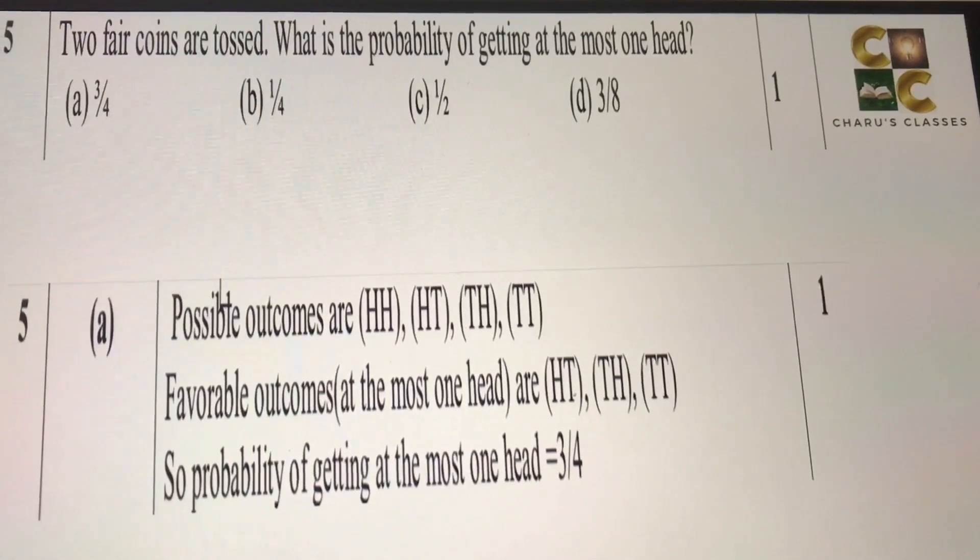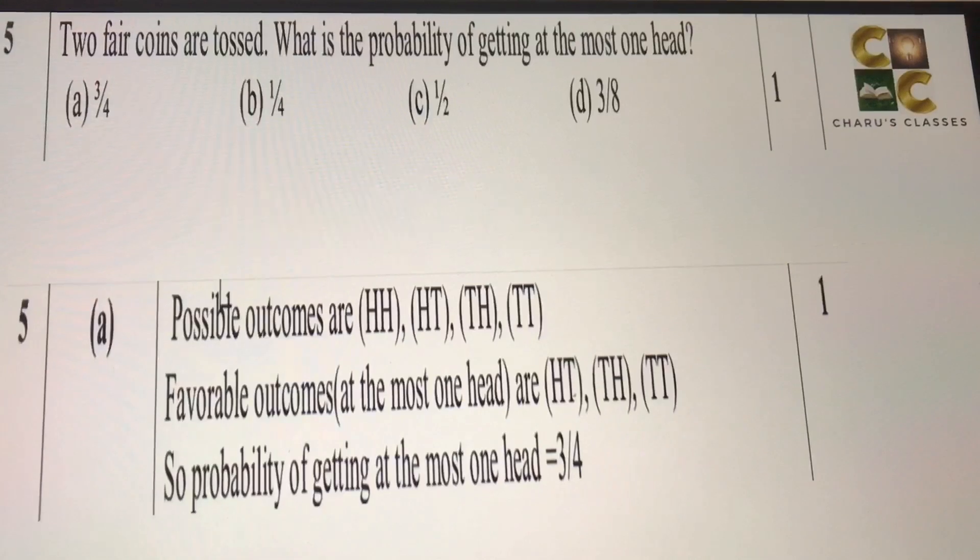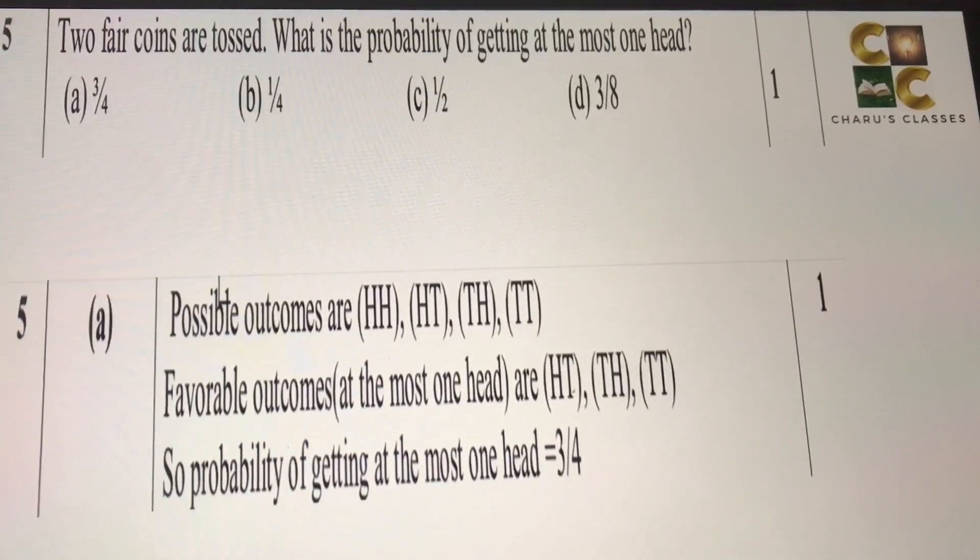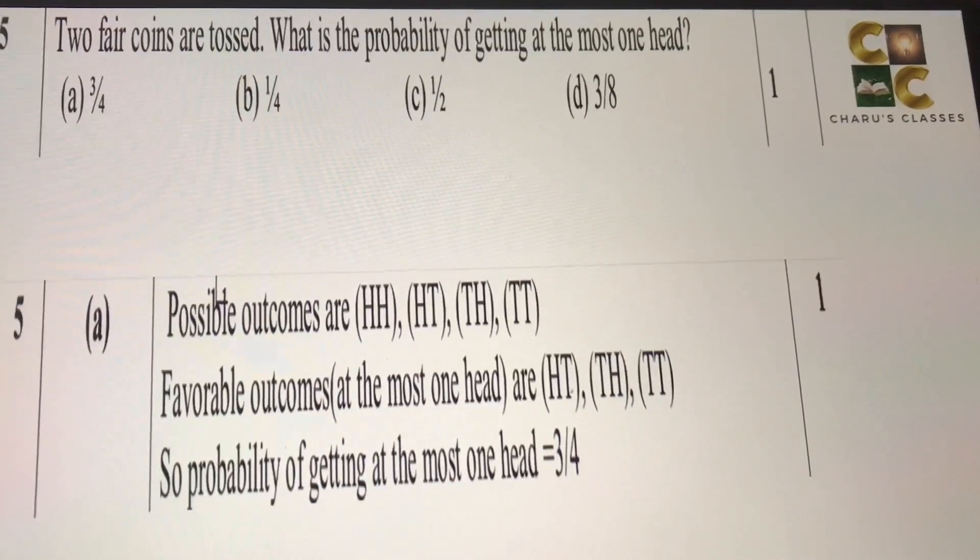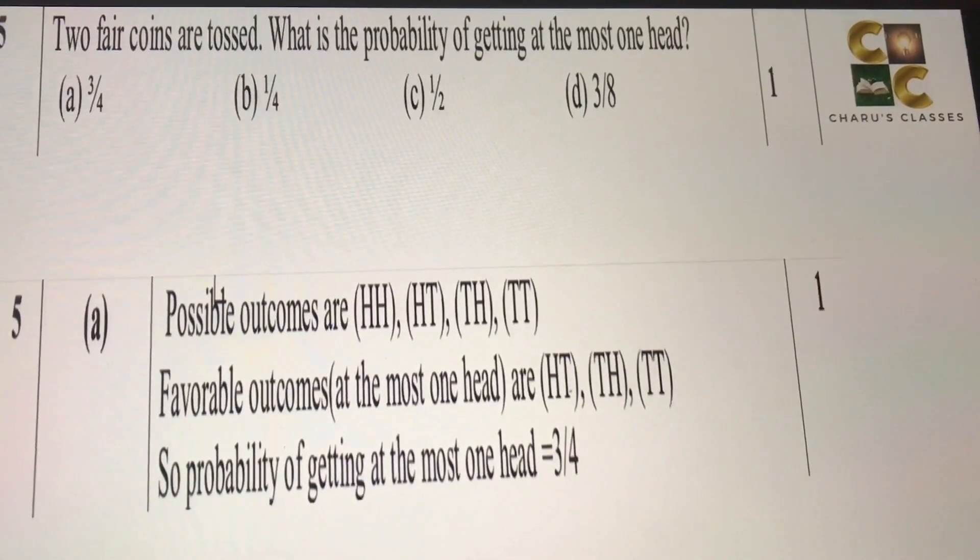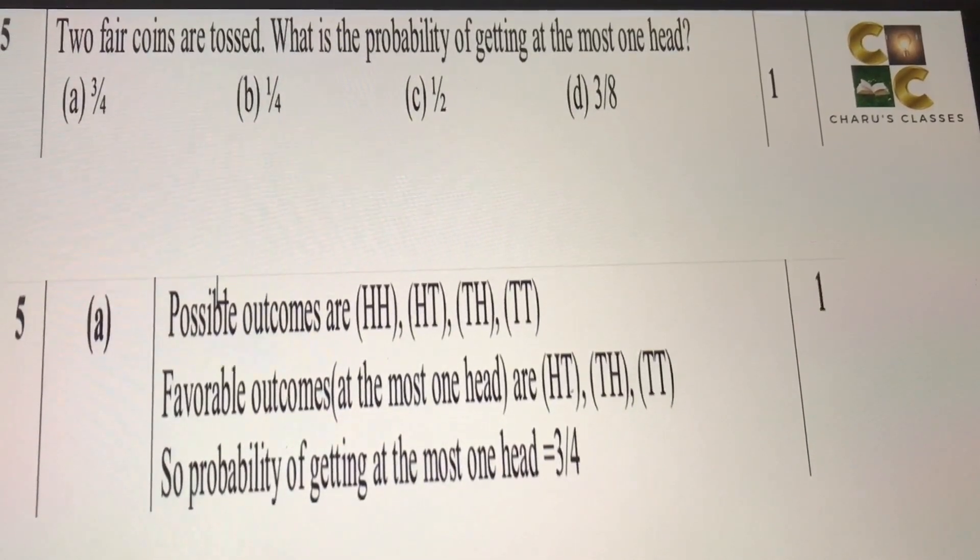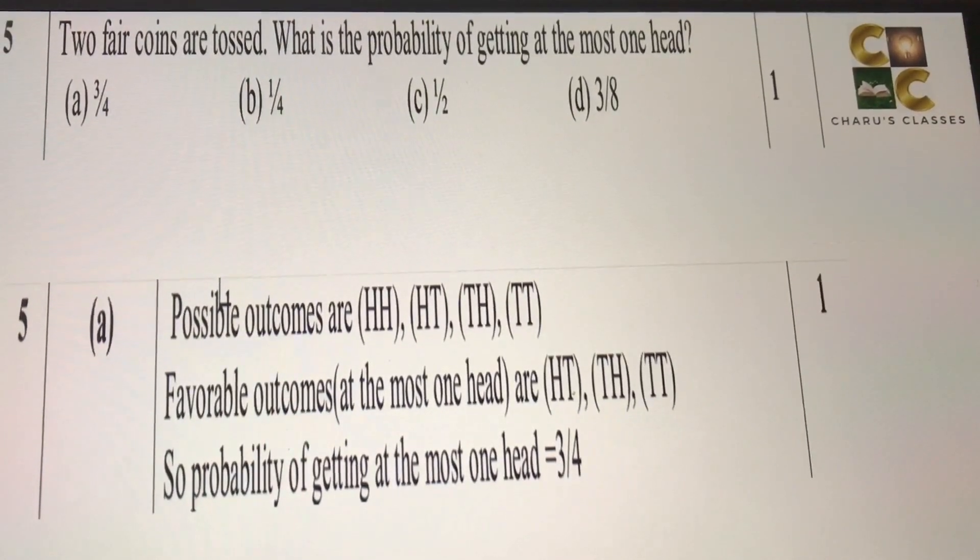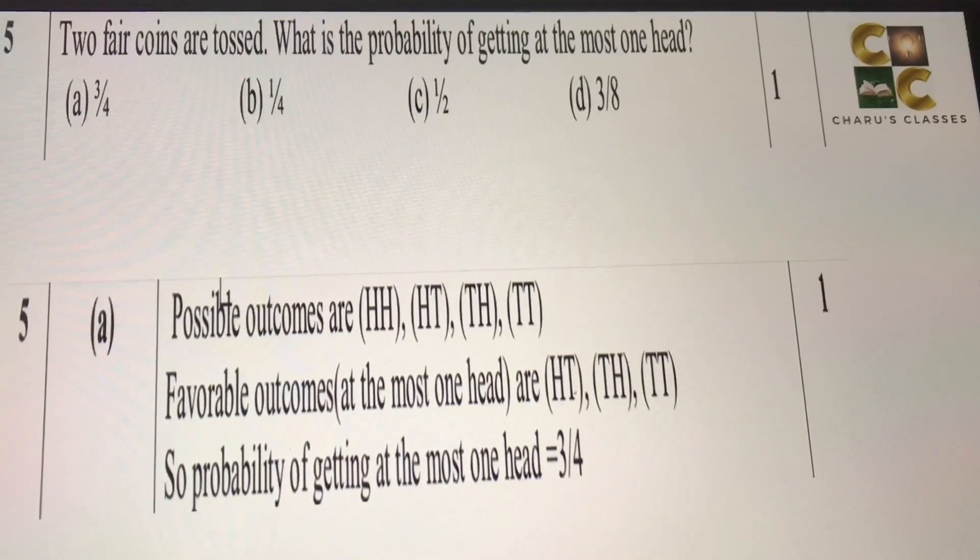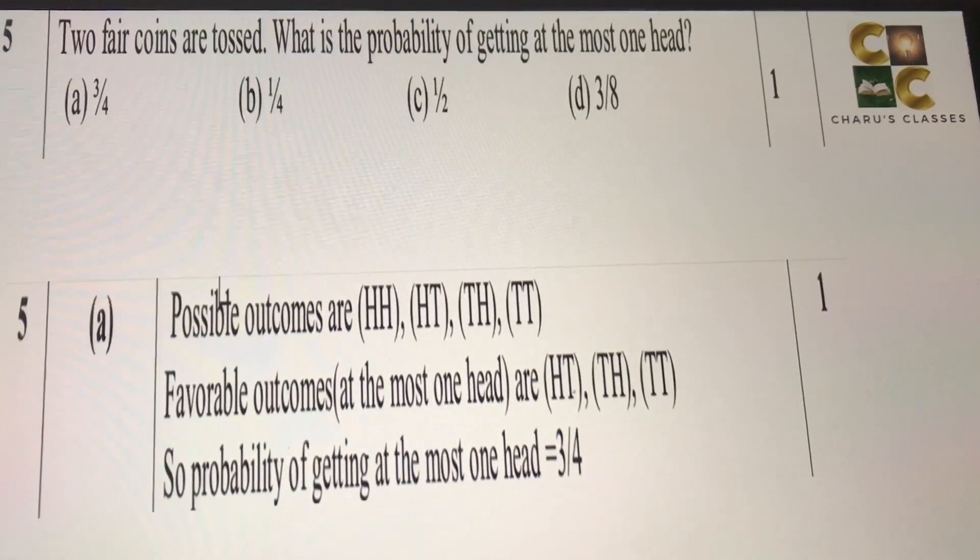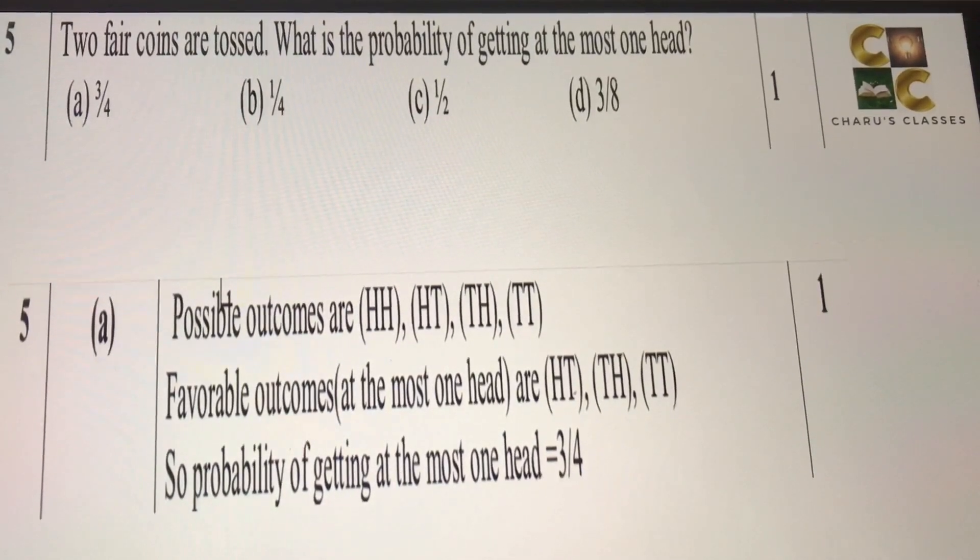Fifth question: two fair coins are tossed. What is the probability of getting at most one head? At most one head means we need maximum one head. Now, the sample space or possible outcomes, if we toss two coins together, they are: HH, HT, TH, and TT. And in these, at most one head means maximum one head is needed, two heads is not needed. And if zero heads, that will also work.